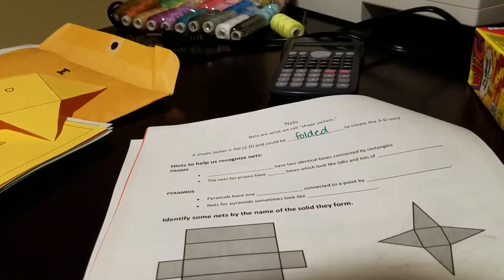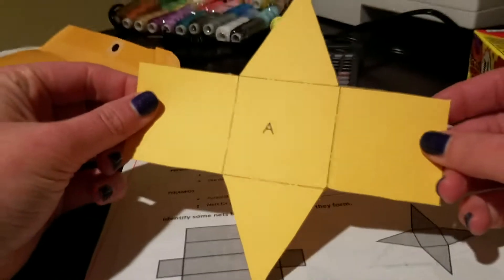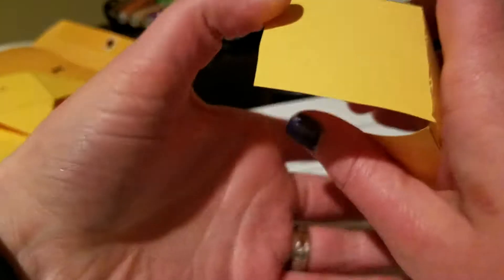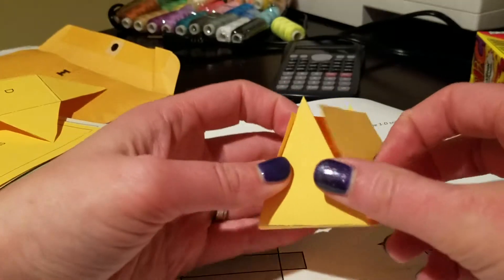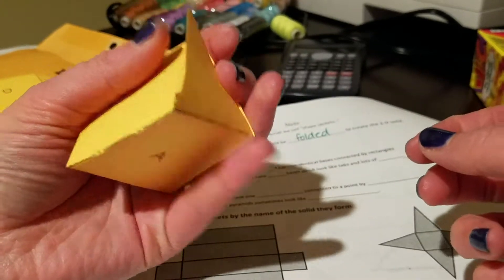If I were to look at this one and I fold it up, I have these rectangles that all come around, and I have two triangular bases. So this is a triangular prism.